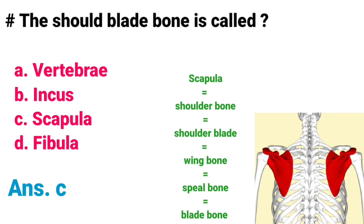The shoulder bone is called: A) Vertebrae, B) Incus, C) Scapula, D) Fibula. Correct answer is option C, Scapula. The scapula bone is also called the shoulder bone, shoulder blade, wing bone, or blade bone. It is the bone that connects the humerus with the clavicle.